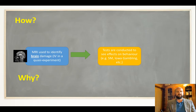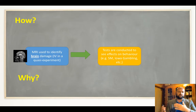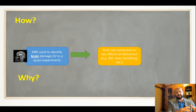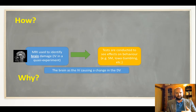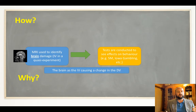For example, in the Iowa Gambling Task, participants did the gambling task as a behavioral measure. In SM's case study, they did things like taking her to a pet store and making her watch videos. So MRI finds the damage, and then we conduct tests to study the behavior. We can see here that the brain is identified as the variable causing a change. That's the 'how' — a summary of how MRI is used to look at this relationship.